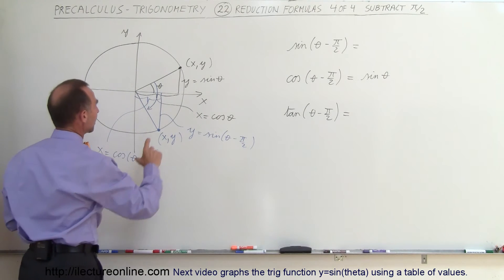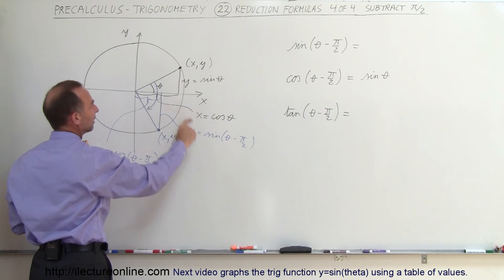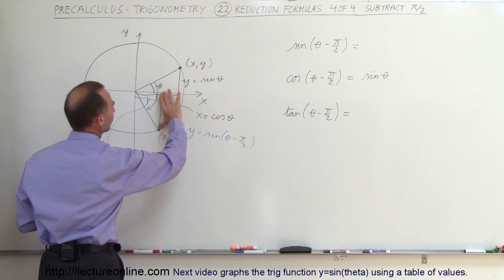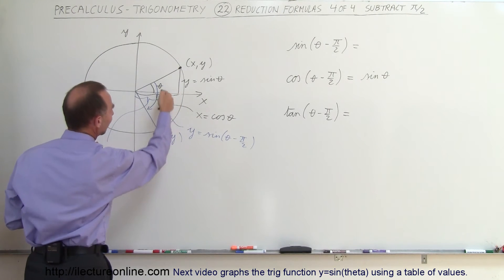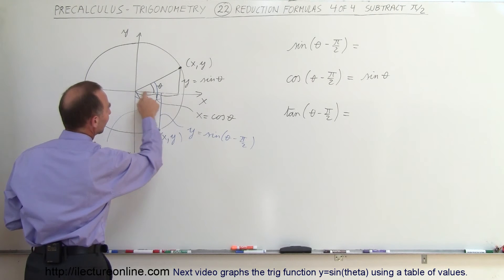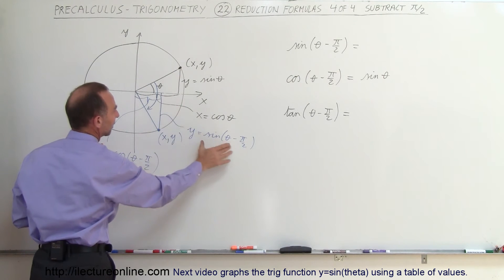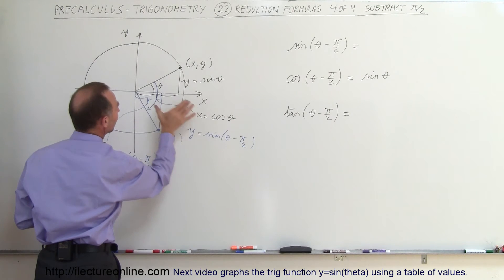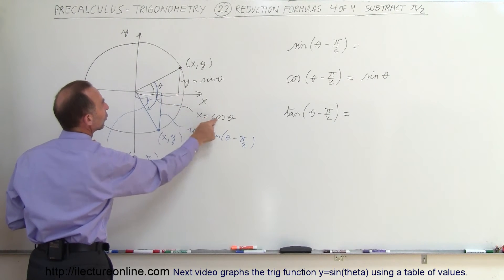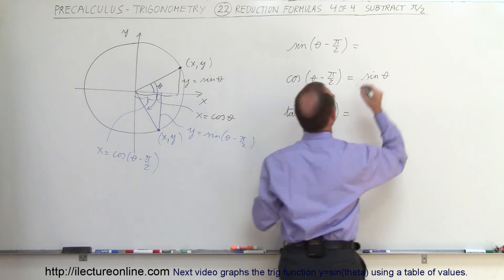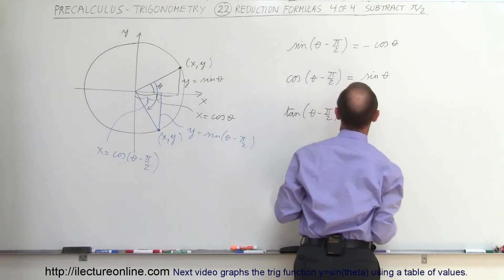What about the sine of theta minus π/2? That value is equal in magnitude to cosine of theta, except it is negative while cosine is positive, so there's a sign flip. Therefore, the sine of theta minus π/2 is equal to the negative cosine of theta.